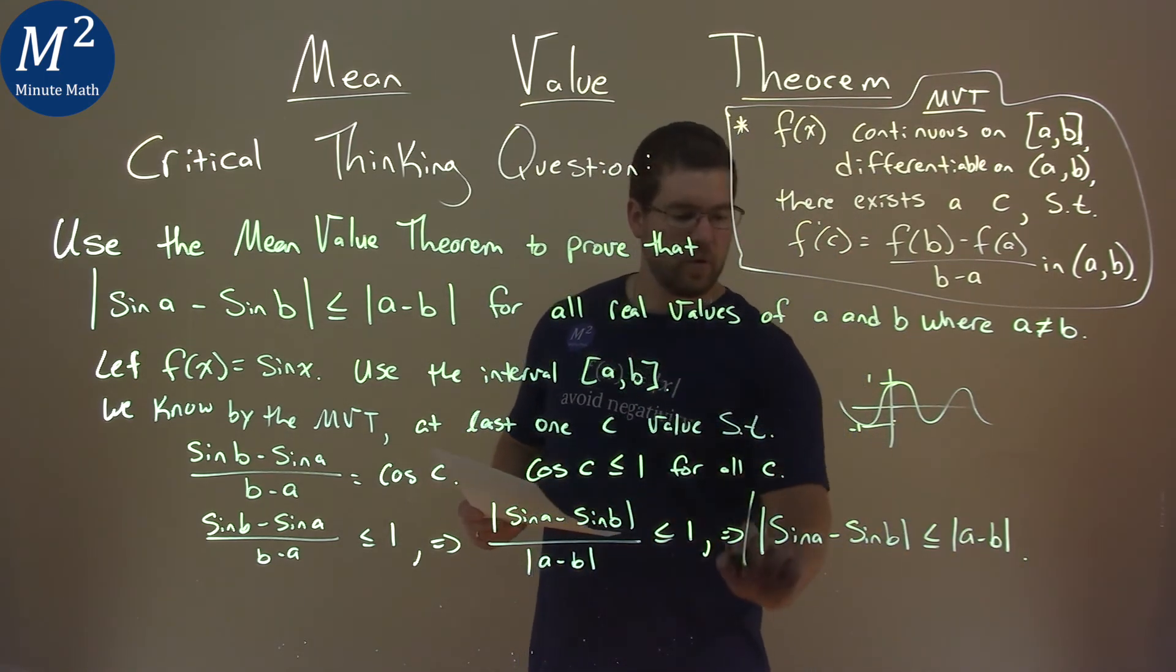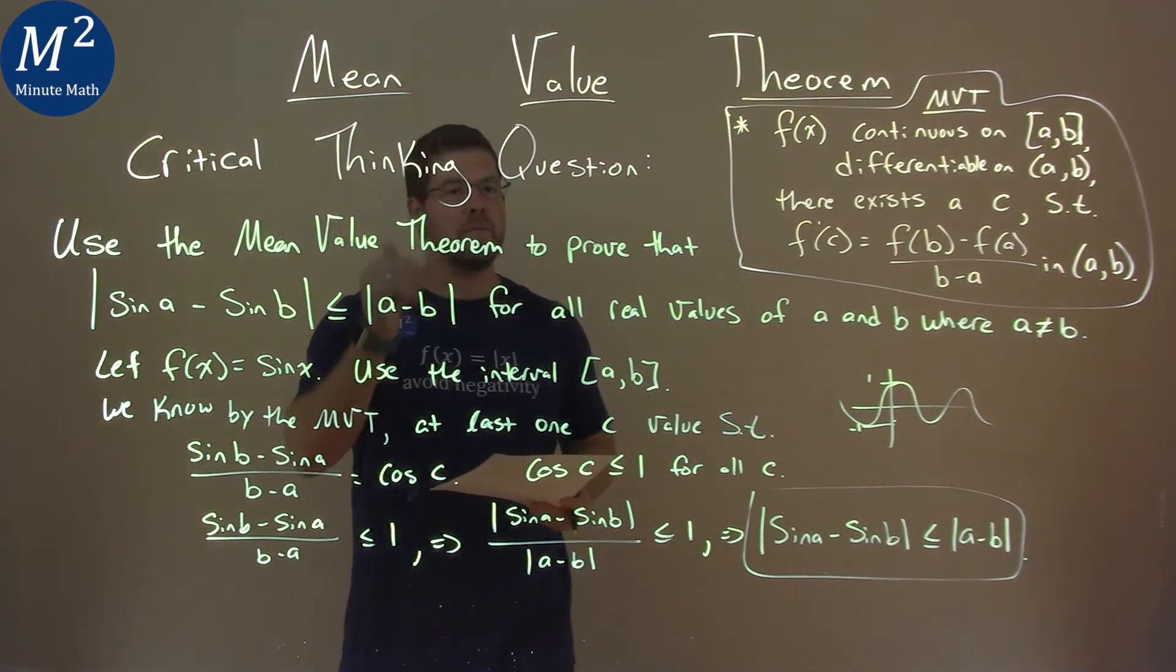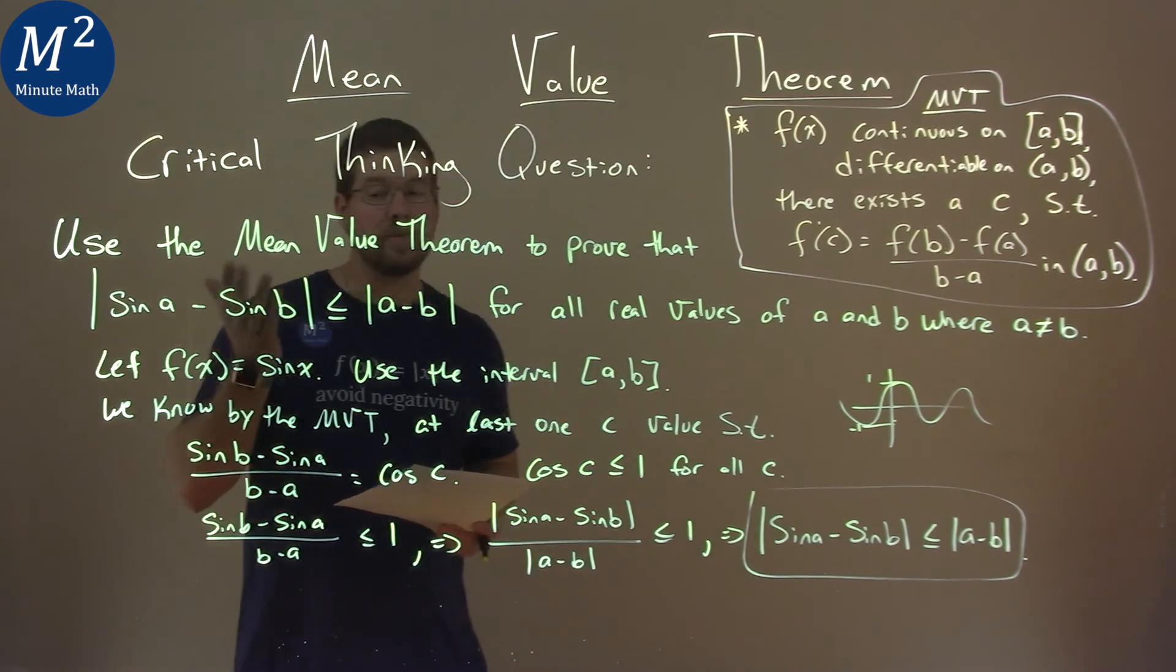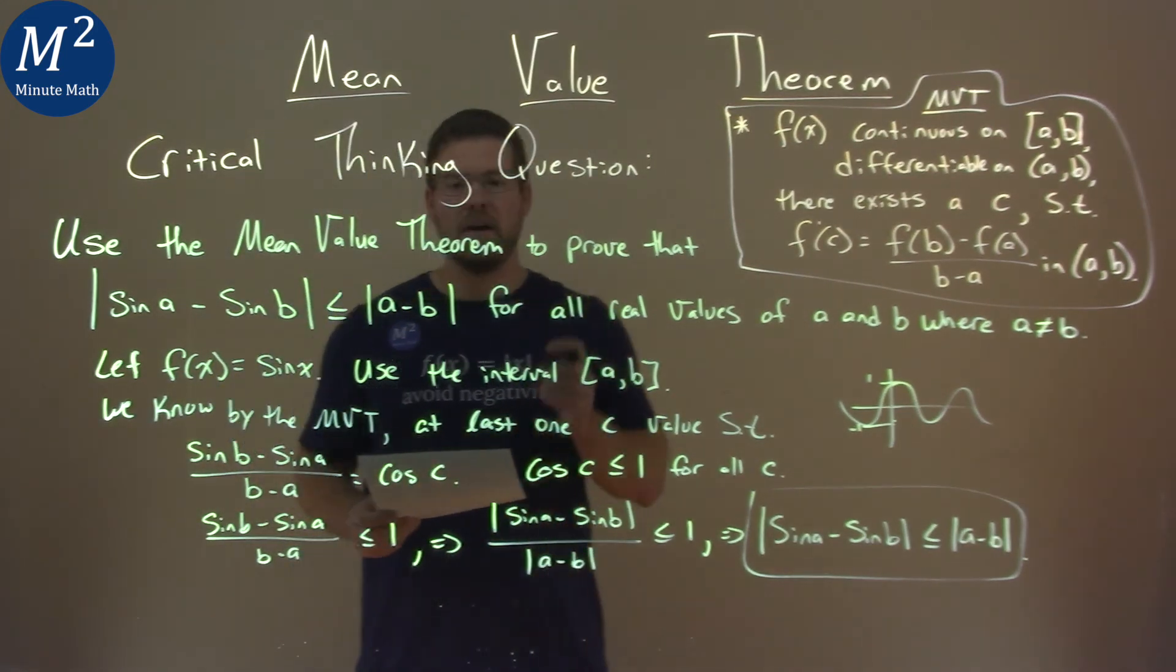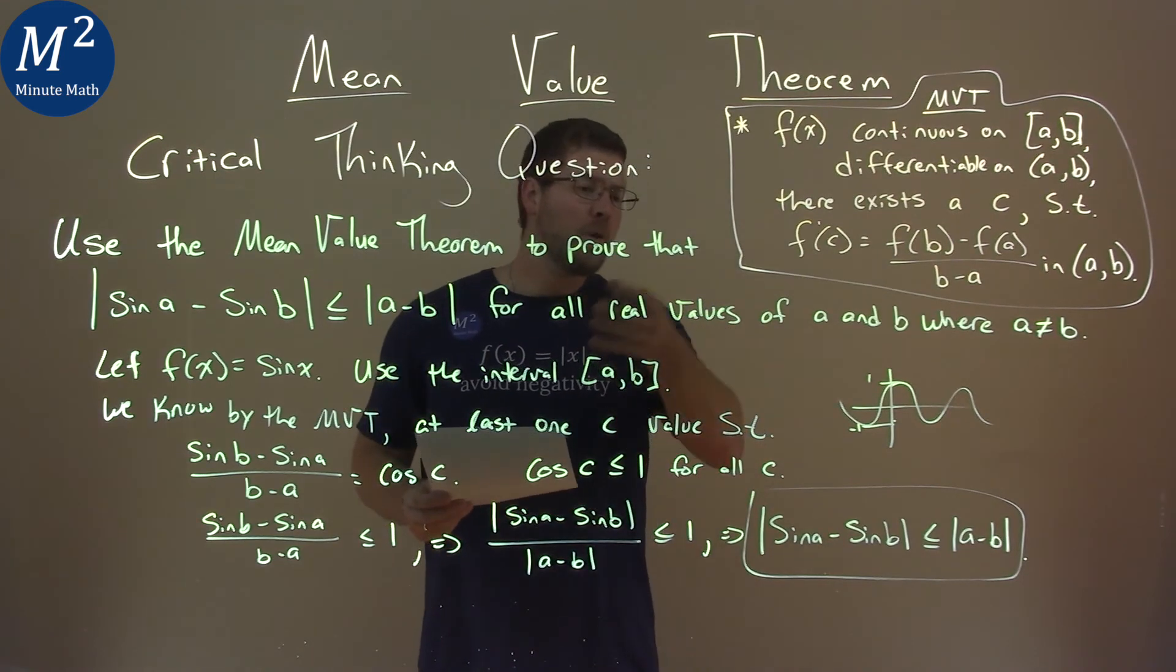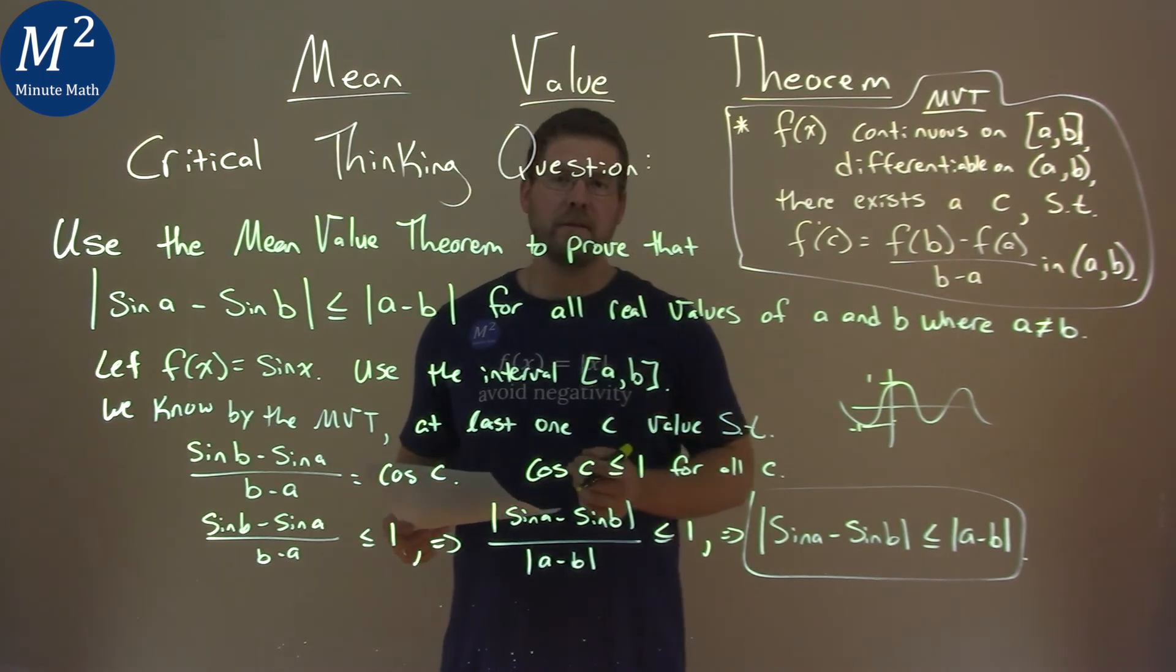We have what we were trying to look for. We've proven, using the Mean Value Theorem, that |sin A - sin B| ≤ |A - B| for all real values of A and B where A is not equal to B. That is our final answer.